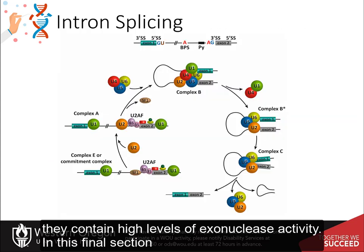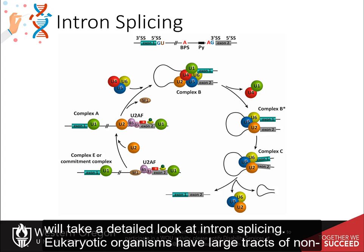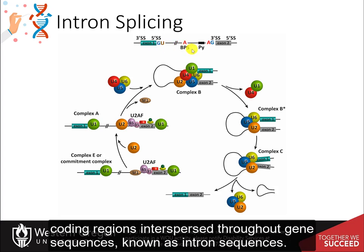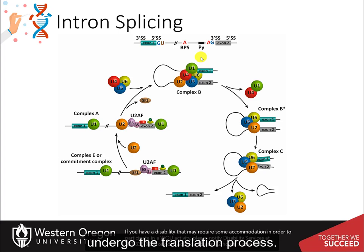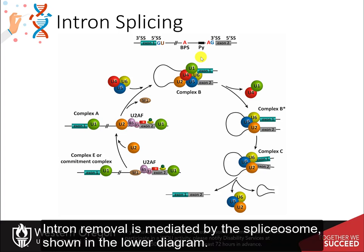In this final section, we'll take a detailed look at intron splicing. Eukaryotic organisms have large tracks of non-coding regions interspersed throughout gene sequences, known as intron sequences. These introns must be removed from the pre-messenger RNA before it translocates into the cytoplasm to undergo the translation process. Intron removal is mediated by the spliceosome, shown in this lower diagram.